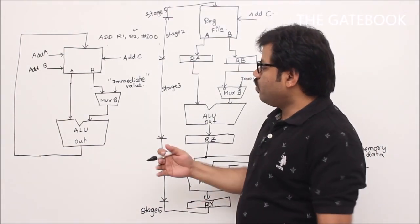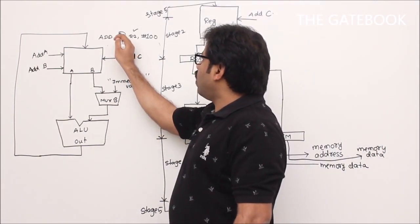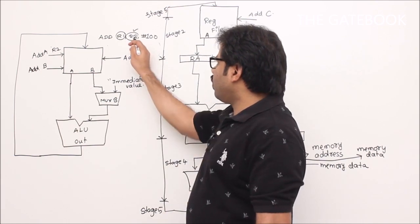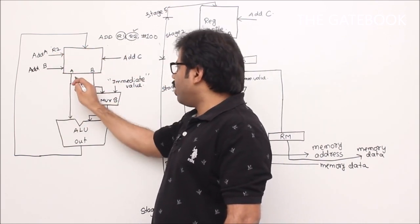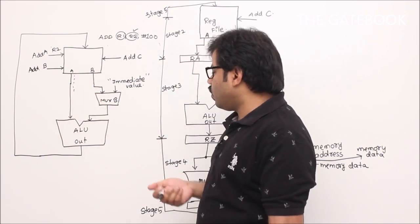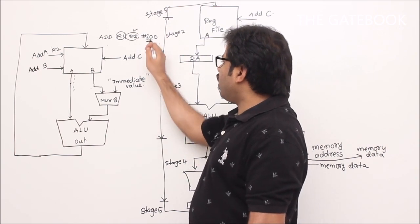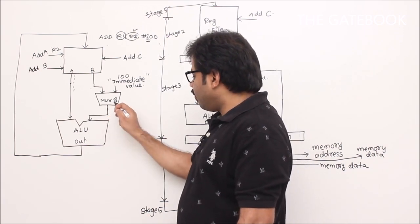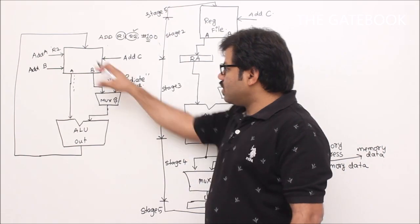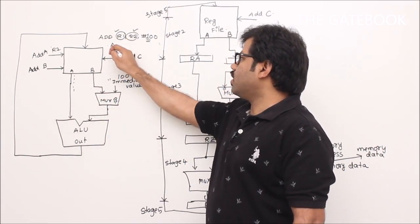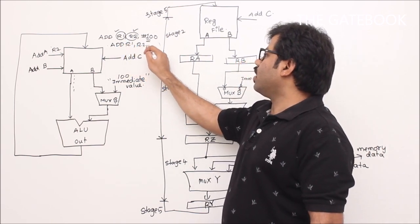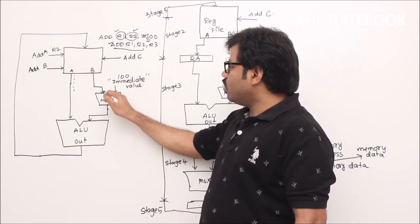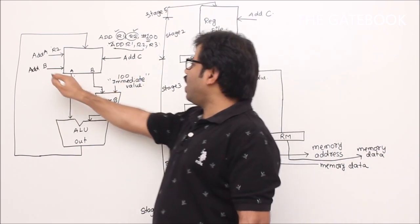The previous circuit without a multiplexer worked only for ADD R1, R2, R3 because there was no way to take the immediate value directly. By adding the multiplexer, we can also execute instructions with an immediate operand. For ADD R1, R2, #100: specify R2's address at port A, so R2's data comes out. Then provide the immediate value 100 as the other input. The multiplexer selects between the register value (R3) and the immediate value (100).